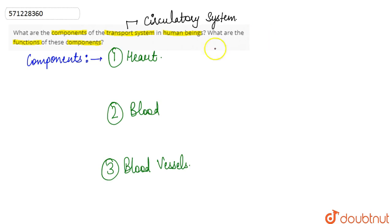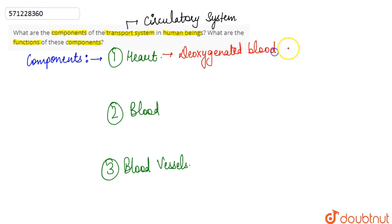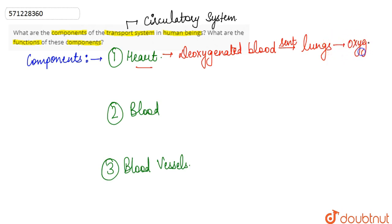If we talk about the heart, it is the organ that receives deoxygenated blood from various body parts and then sends this deoxygenated blood to the lungs, where it undergoes oxygenation — that is, purification through the addition of oxygen and removal of carbon dioxide from the blood.